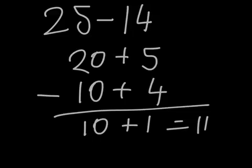If we then work down the question again and start to figure that out, we've got 20 take away 10 is 10, 5 take away 4 is 1, so that's a positive 1, so 10 plus 1 equals 11.